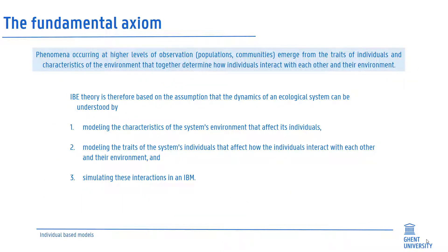An individual-based ecology has one fundamental axiom: phenomena occurring at high levels of observation — in populations, communities, and ecosystems — emerge from the traits of individuals and characteristics of the environment that together determine how individuals interact with each other and their environment.